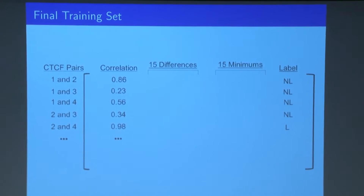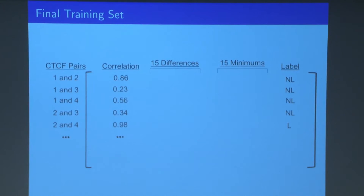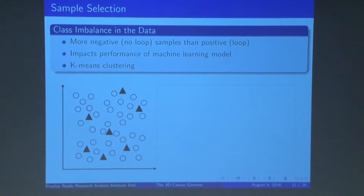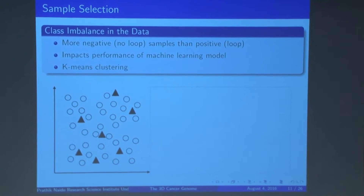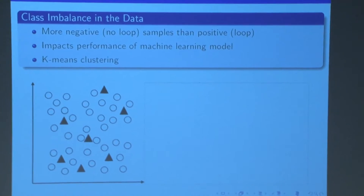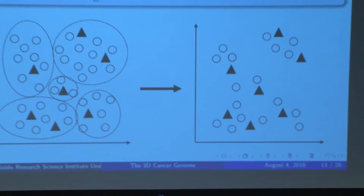This is what the final training set looked like for feeding into our machine learning algorithm: pairs of CTCF regions across the genome, their correlation values, 15 differences in minimums between transcription factors and histone modification factors, and whether or not they potentially form a loop. A key problem we noticed was class imbalance — the amount of positive loop-forming data was far less than negative data, at a ratio of about 1 to 6,000. Instead of randomly subsetting, we used k-means clustering to identify unique clusters sharing similar genetic information profiles, allowing us to randomly remove data points without losing important information.